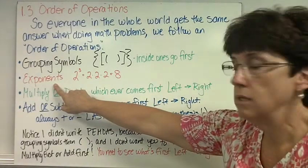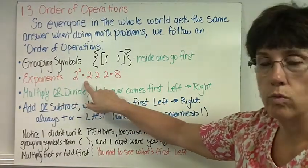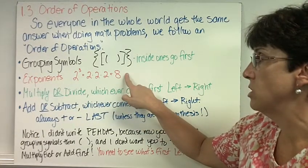Exponents, we talked about in the last lesson, they come second. So 2 to the third power, we write in expanded form 2 times 2 times 2, which is 8.